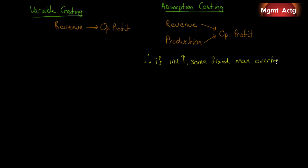And recall back in chapter two, we talked about product costs. And when we went through chapter three and chapter four — job costing and process costing — we made it very clear that these product costs do not hit the income statement until something is sold. So if it's not sold, it doesn't hit the income statement; it's deferred in inventory.